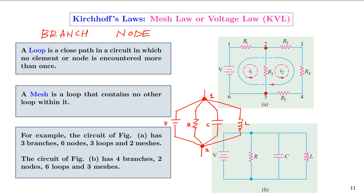A branch is that part of a network which lies between two nodes. There are three branches in figure A with nodes 2 and 5. The first branch connecting 2 and 5 consists of R1 and voltage source V. The second branch consists of R3. The third branch consists of R2, R4, and R5. Figure B has four branches between nodes 1 and 2: V, R, C, and L, each forming a separate branch.